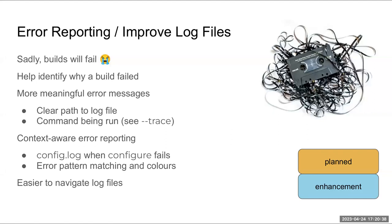Error reporting and log improvements are planned. We tend to look in log files because the error reports are not always great — builds do fail and chasing down errors is painful. The plan is to make it more obvious which log file is relevant and what command was running when something went wrong. We also want context-aware reporting — for example, if configure fails, point automatically to the configure log — and better pattern matching using existing tools.